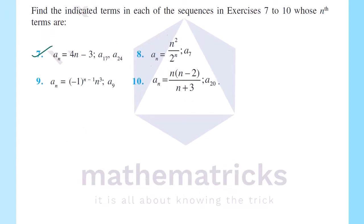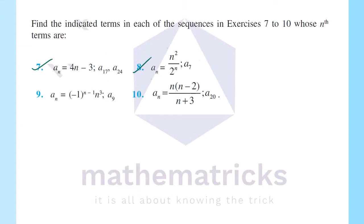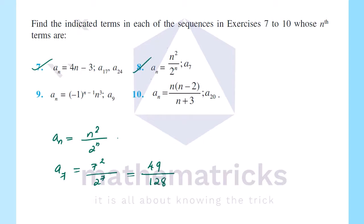Next question: aₙ = n² / 2ⁿ. We need to find a₇. So a₇ = 7² / 2⁷ = 49 / 128. The answer is 49 divided by 128.